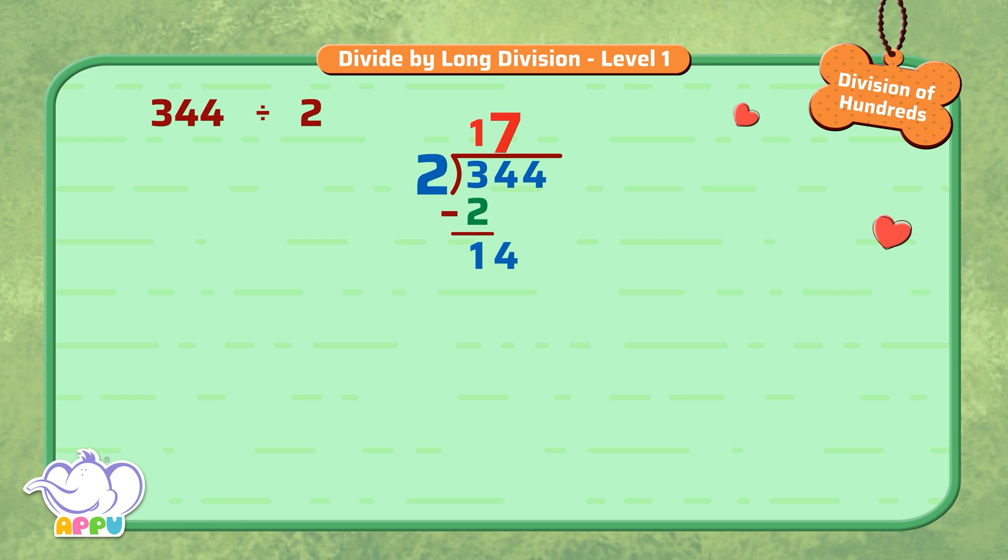We multiply 2 and 7, we get 14. We subtract 14 from 14, we get 0.